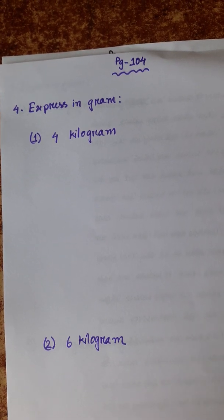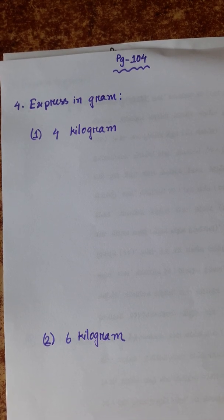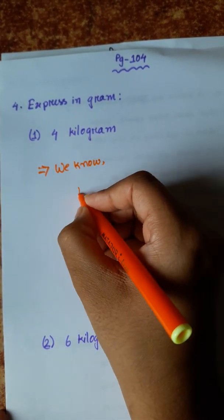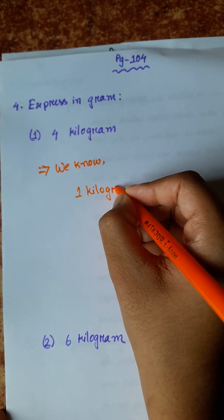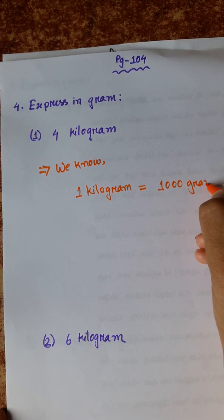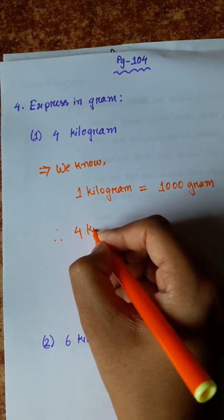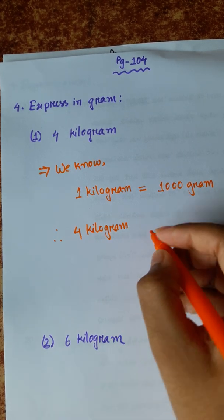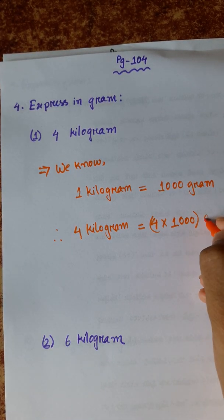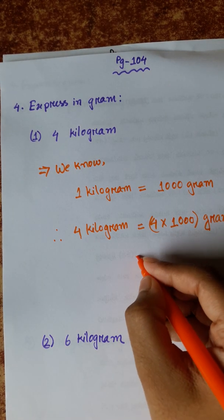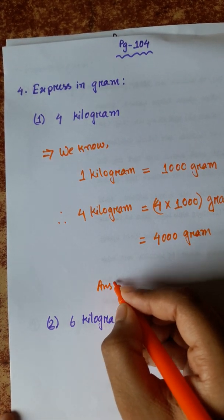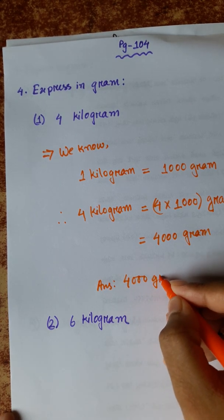Number 4 is expressing in grams. Number 1: 4 kilograms. We know 1 kilogram is equal to 1000 grams. So 4 kilograms is equal to 4 into 1000 grams, which equals 4,000 grams. Answer: 4,000 grams.